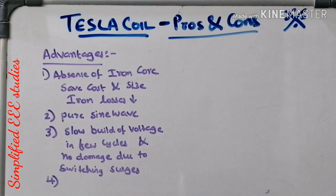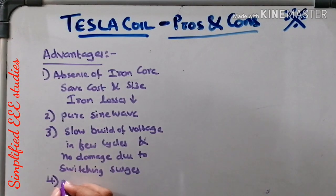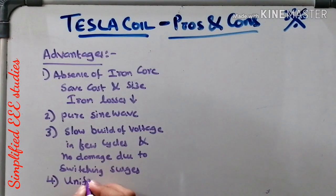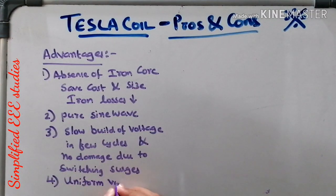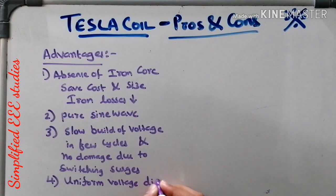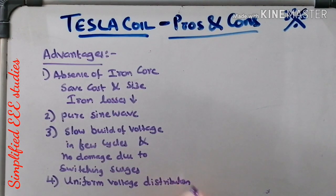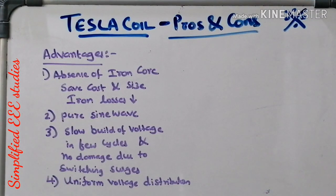There is also uniform distribution of voltage at the coil — uniform voltage distribution at the winding. That is another advantage. These are a few advantages of the Tesla coil.